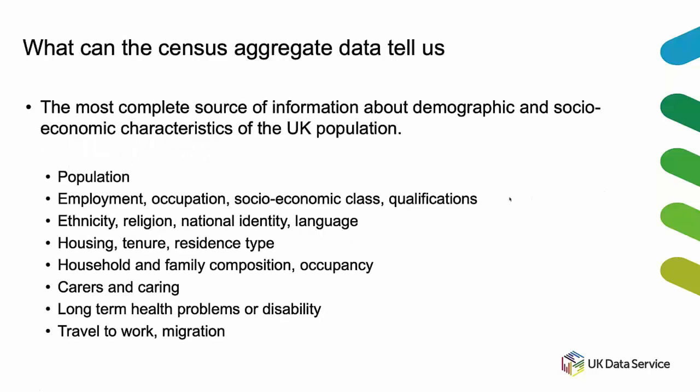So what can the census aggregate data tell us? It is the most complete source of information about demography and social economics in the UK - as near as possible 100% of the population. No other surveys come close to that. It's every 10 years, so we can get some longitudinal studies from that. And it covers a wide variety of topics - that's not an exhaustive list - and there are many tables or variables where we're crossing these topics over.